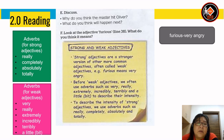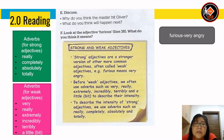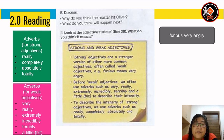Discuss: why do you think the master hit Oliver? What do you think will happen next? Look at the adjective 'furious' in line 38. What do you think it means? Furious actually means very angry.